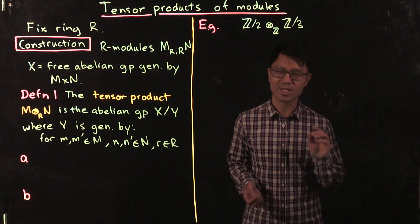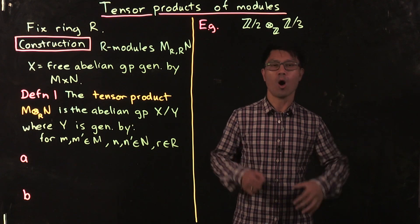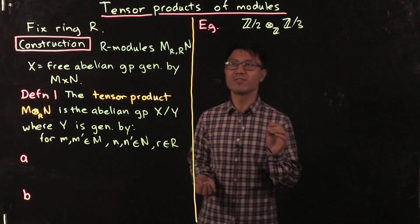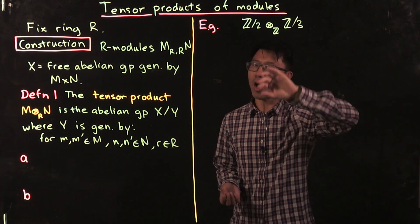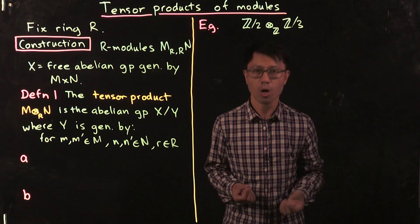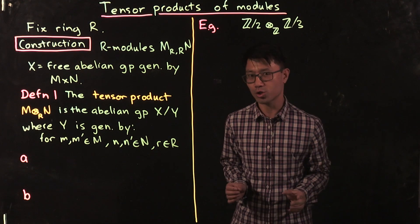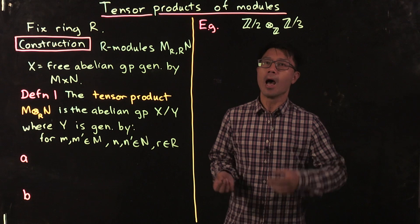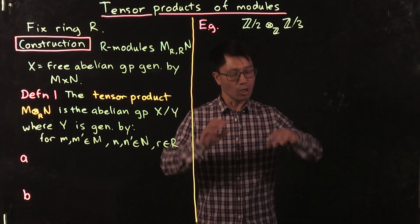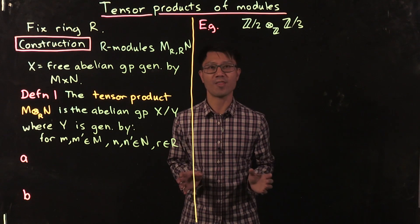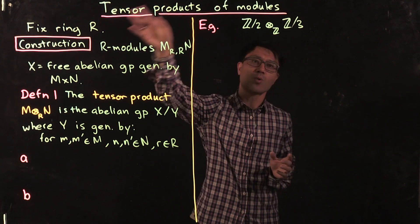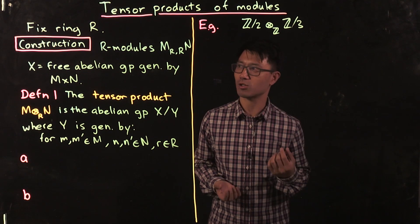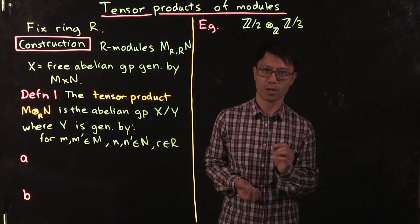Hi, I'm Daniel Chan from UNSW Sydney. Welcome to another adventure in pure mathematics. You might have seen my video playlist on tensor products in linear algebra, where we looked at the very important notion of tensor products of vector spaces. But the notion of tensor products actually goes much further than that — you can take tensor products of modules, and this is very useful more generally in algebra. So let's see how that works.